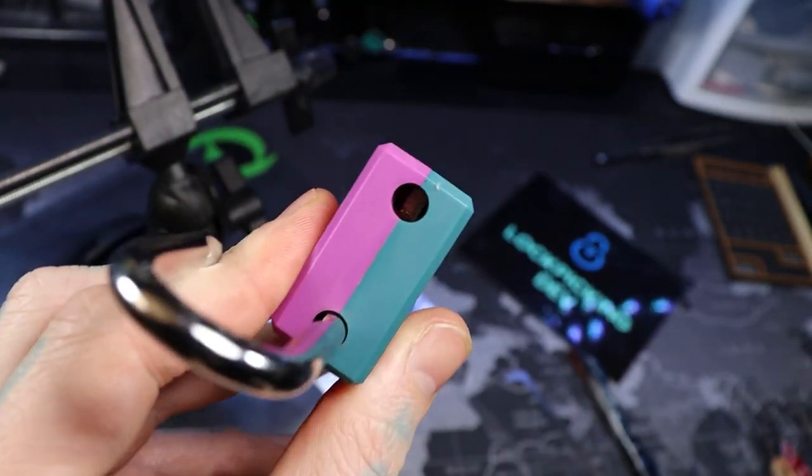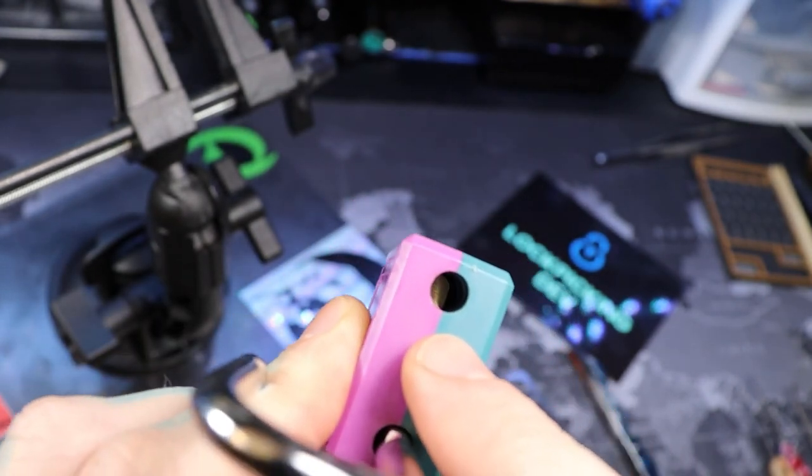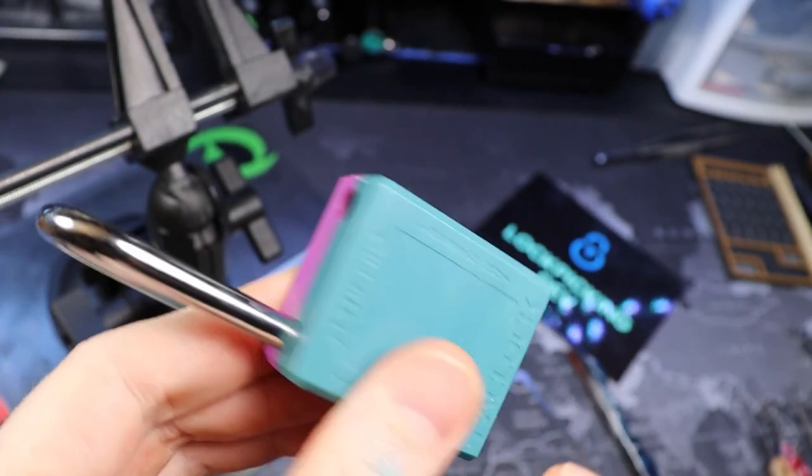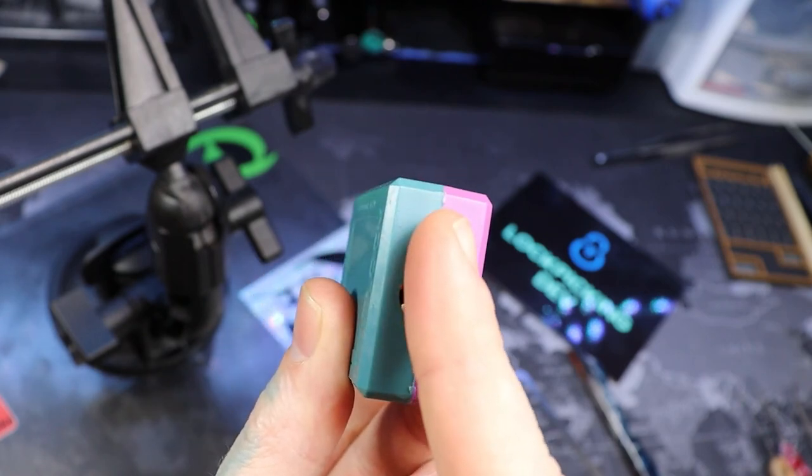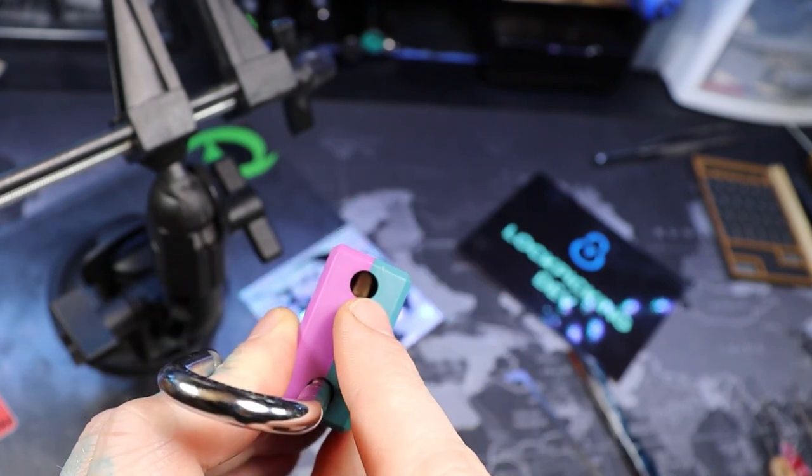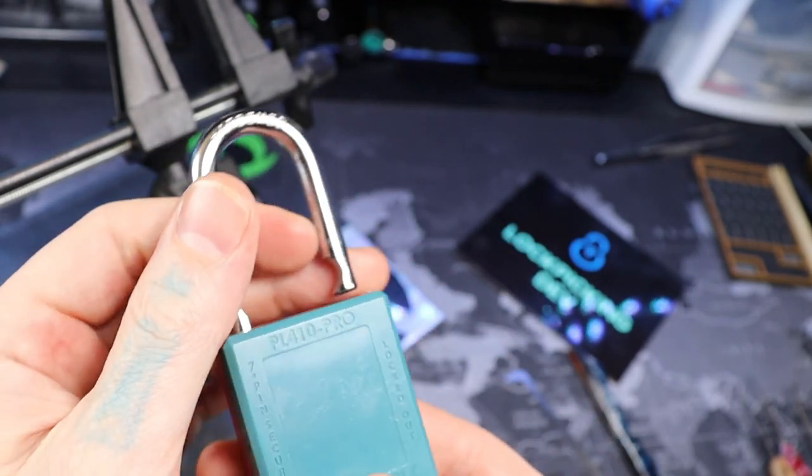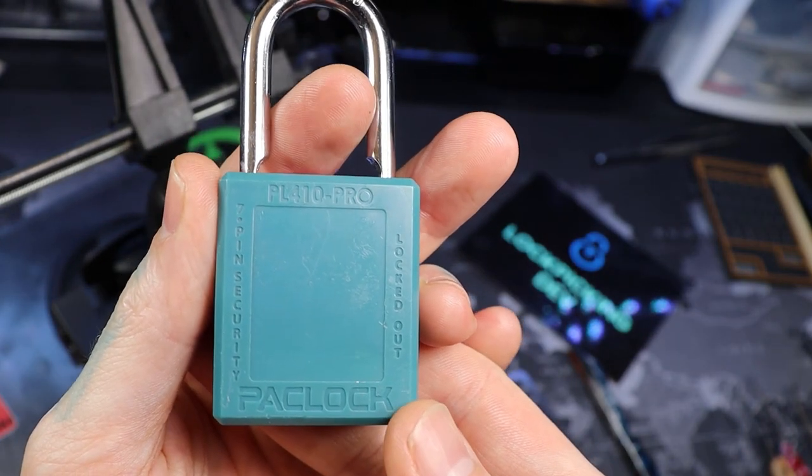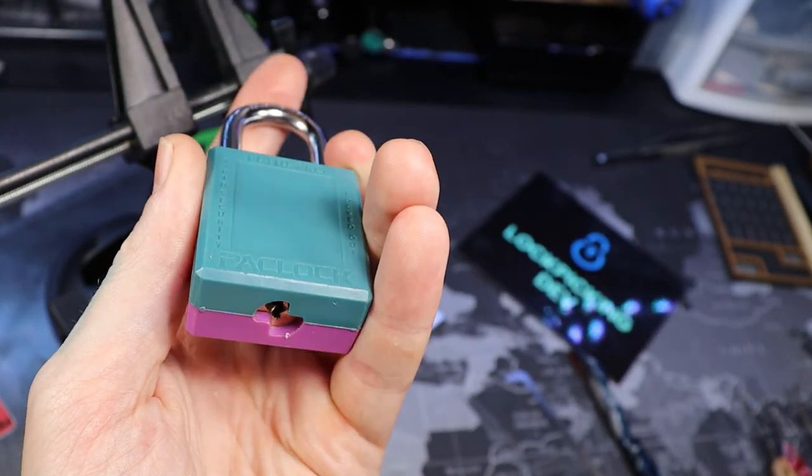This actually cannot be gutted. You can see like the top of the core right there. So usually the Bible's right there. So yeah, that's the Bible right there. So yeah, that's the Pac-Lock PL-410 Pro. Very fun lock.